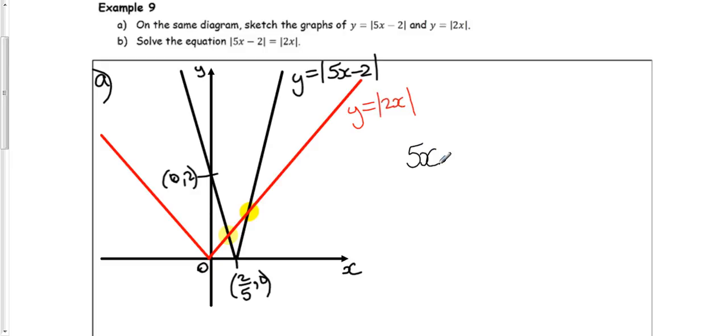Let's think about this statement in part B. Mod of 5x minus 2 equals mod of 2x. Well, that means the thing inside the modulus, 5x minus 2, must either be equal to positive 2x or negative 2x. This goes back to example 8, where I used a similar method. If we have modulus of something equaling a number, that means the something must equal positive or negative A.